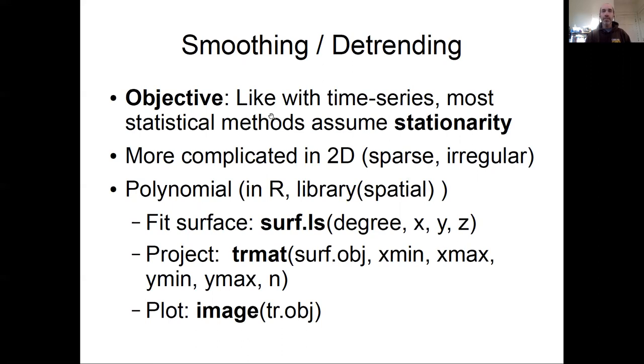Because of that, things like polynomial smoothing, which we used for time series analysis and then generalized to locally weighted polynomials, are things you can do in spatial statistics as one of the more common approaches to detrending.